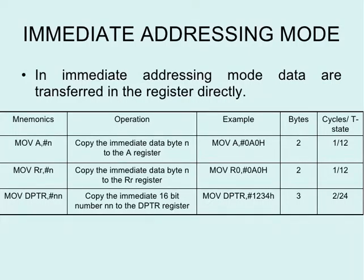This is the fourth video of 8051 series. My name is Milansha and today's topic is addressing modes of 8051. There are five addressing modes in microcontroller, the first one being immediate addressing mode. In this type, the operand is specified in the instruction along with the opcode — in simple terms, the data is provided in the instruction itself.